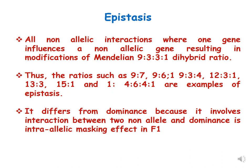So what are these modified dihybrid ratios? These are 9:7, because 9:7 is nothing but 9:3:3:1 where 7 includes 3:3:1. The ratios are 9:7, 9:6:1, 9:3:4, 12:3:1, 13:3, 15:1, and 1:4:6:4:1. All are examples of modified dihybrid ratios.